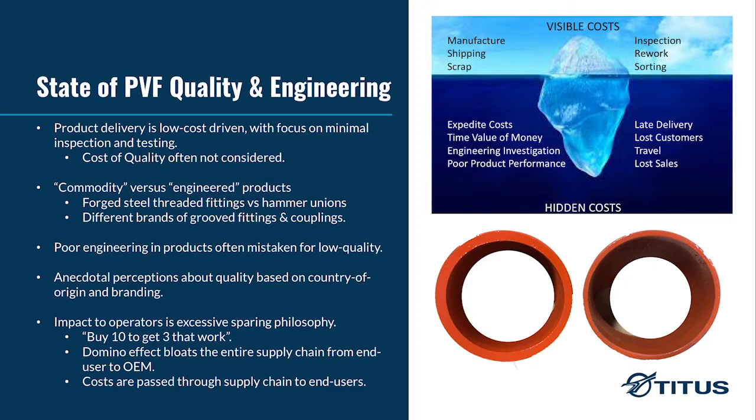One of them has twice the wall thickness of the other. This comes with a deceptively simple but serious question, because there are only two ways to get there. Option one: they were both designed the same, and one is made right while one is made wrong. Or they're both made correctly, which means they were designed differently. It's very difficult to tell the difference, and that's where the key takeaway comes from: poor engineering behind a product is often mistaken for low quality.